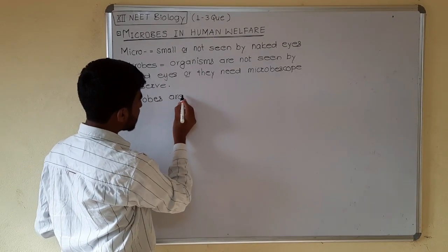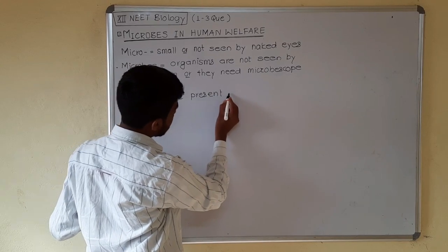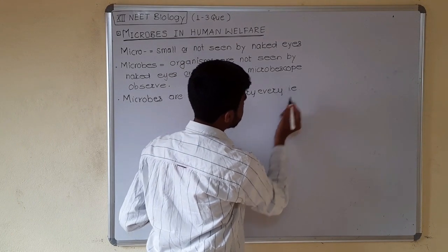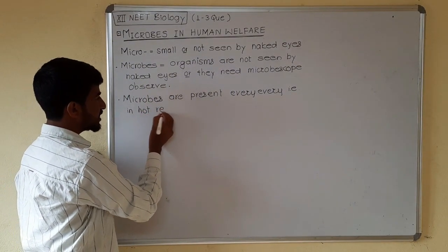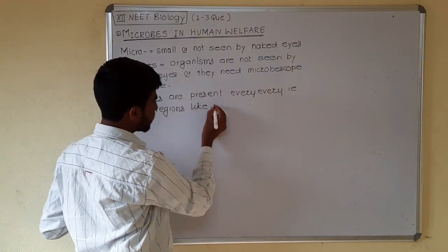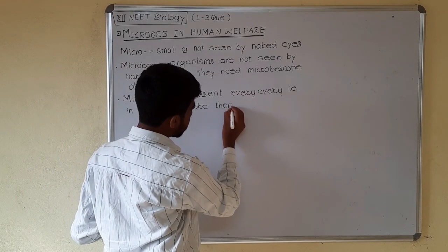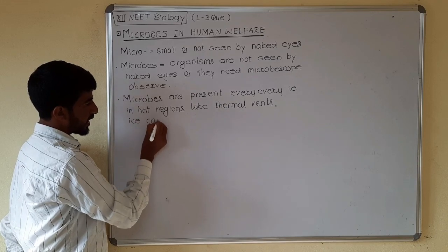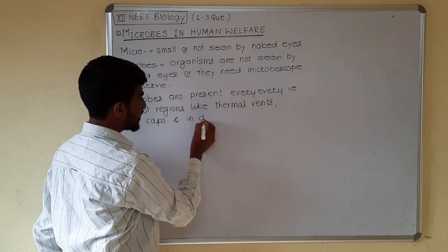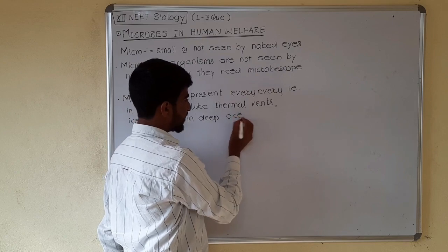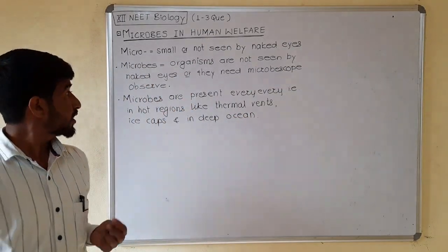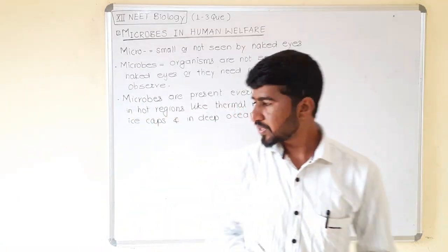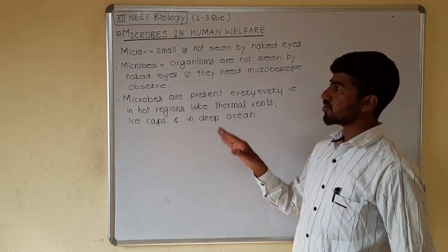Microbes are present everywhere — that is in hot regions like thermal vents, where temperature is 100 degrees Celsius, as well as in deep ice caps and in the deep ocean. So micro-organisms are found in all these extreme environments.